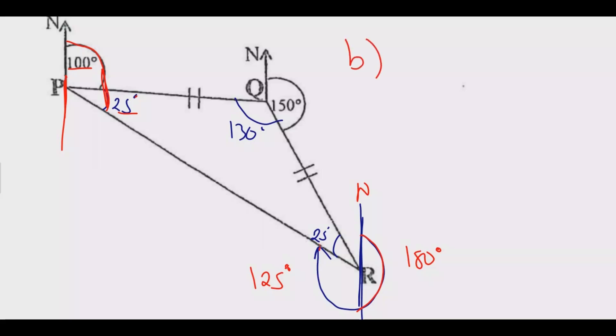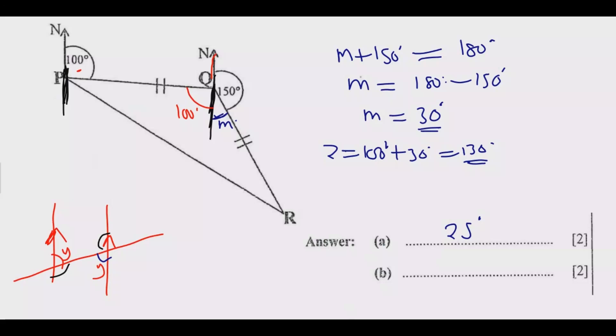The bearing is the summation of these two angles: 180 degrees plus 125 degrees. Adding these: 0 plus 5 is 5, 80 plus 20 is 100 (carry the 1), 1 plus 1 is 2. So we get 305 degrees - that's the bearing of P from R.